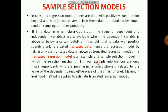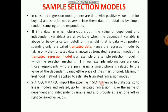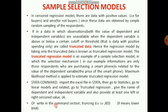The truncated regression model is an example of a sample selection model in which the selection mechanism is related to the value of the dependent variable — in our example, information is available only for respondents who are purchasing a smartphone. Maximum likelihood is applied to estimate it. The Stata command is: go to Statistics > Linear Models and Related > Truncated Regression, provide variable names and censoring limits, or in the command section write: truncreg [dependent variable] [independent variables], ll(0).